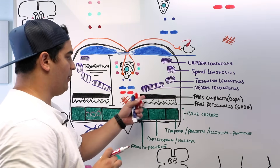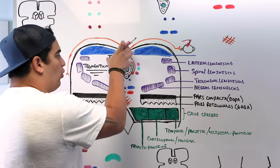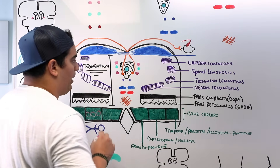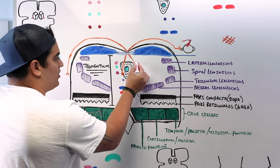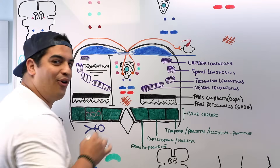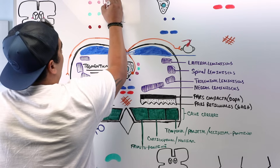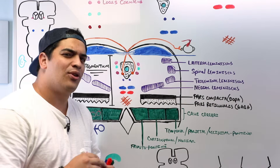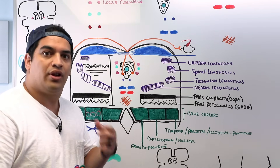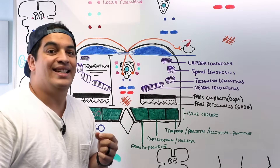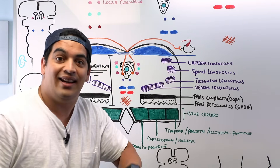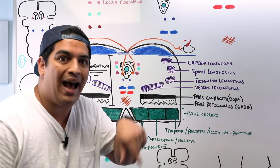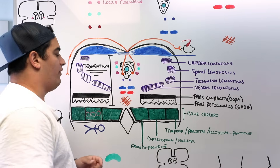Going into the middle portion of the tegmentum: near the periaqueductal gray matter are pink nuclei called the locus ceruleus, where most of the noradrenergic neurons are produced. The locus ceruleus releases large amounts of norepinephrine and is involved in the descending pain modulation pathway, inhibiting specific pain pathways.